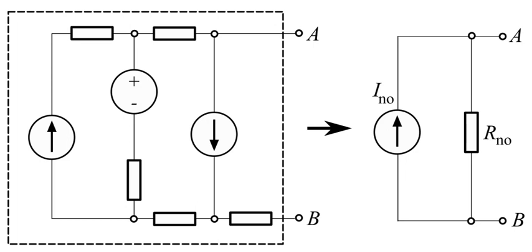RNO = RTH. VTH = INO × RNO. RTH = INO × RNO.